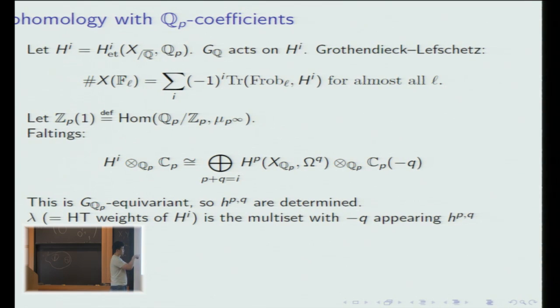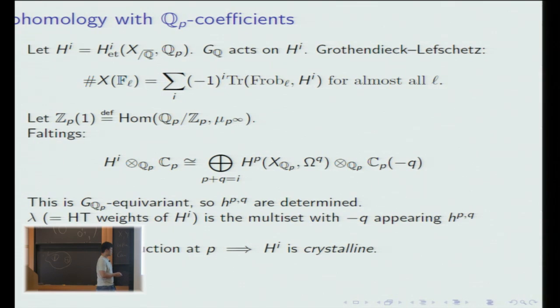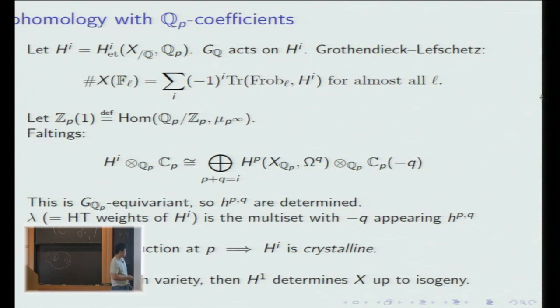I'll let λ be a multi-set with -q appearing h^{p,q} times. You can think of λ as just being equivalent information to the Hodge numbers, and so λ will be called the Hodge-Tate weights of H^i. The other thing I wanted to mention is that if X has good reduction at p, then this Galois representation H^i has this special technical property of being crystalline, and one should imagine that the converse is morally true, even though not literally true. Finally, there's a similar theorem to Riemann's theorem in the complex case: if X is an abelian variety, then H^1 determines X up to isogeny.